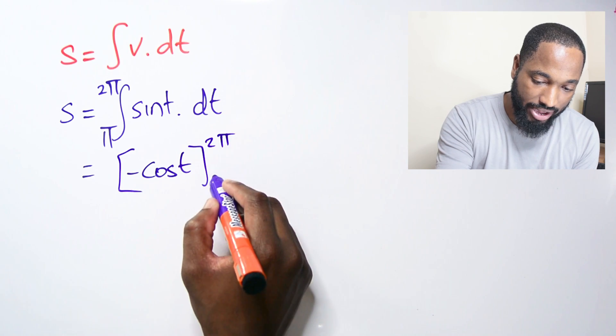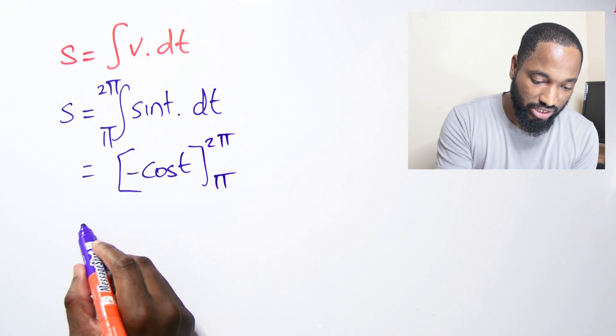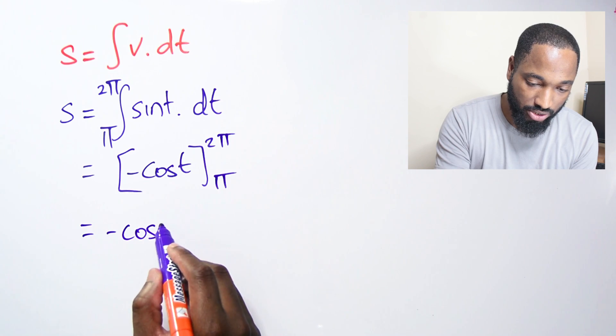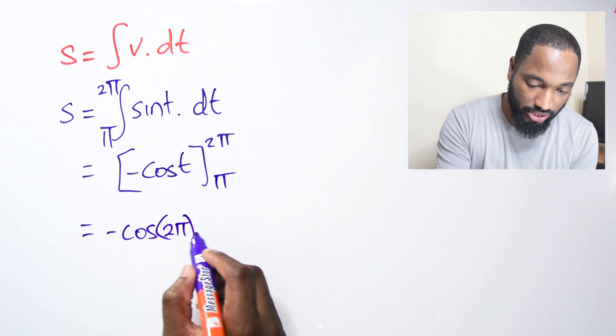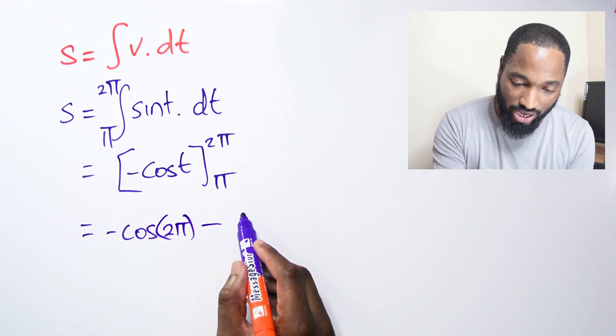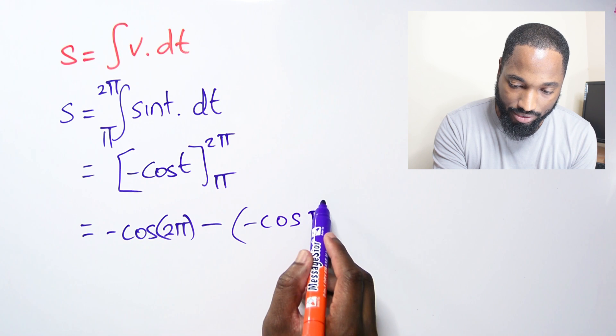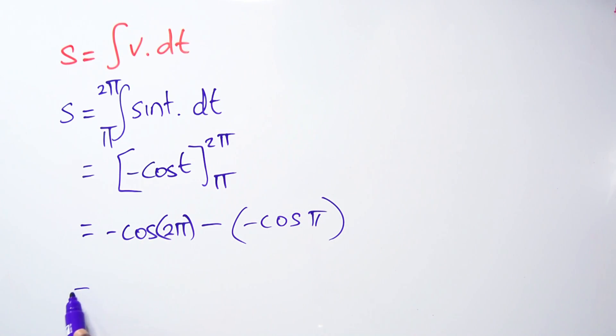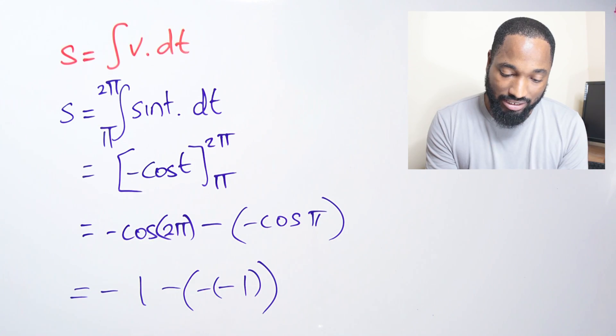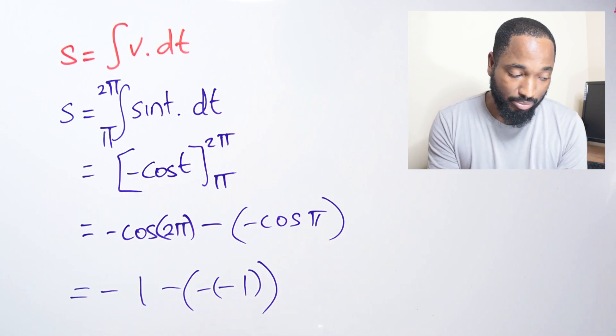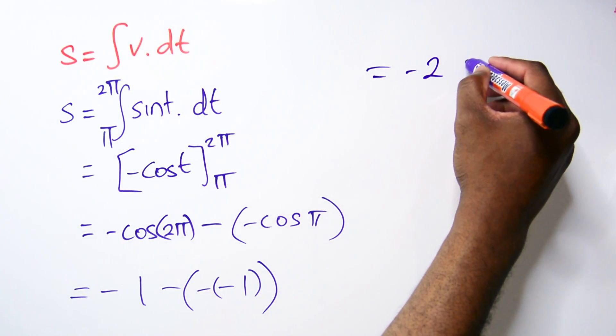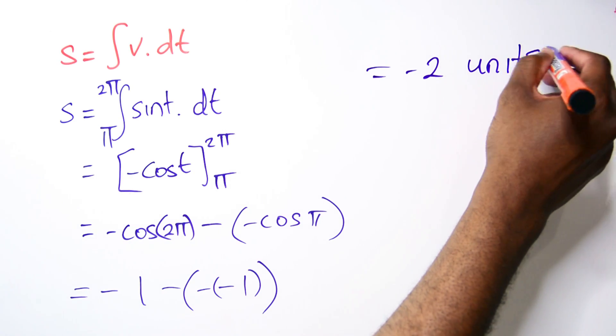The integral of sine is negative cosine t. We substitute those values: 2π and π. We substitute the top one first: negative cos(2π), and we need to subtract negative cos(π). When we work this out, we get negative one. Cos(2π) is 1, and cos(π) would be negative 1, so we have negative negative one.